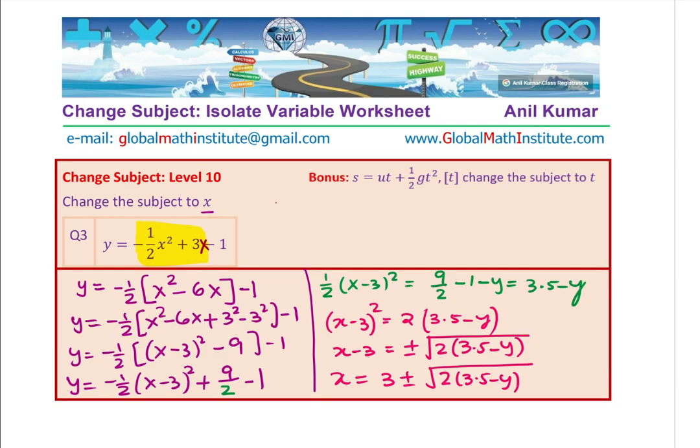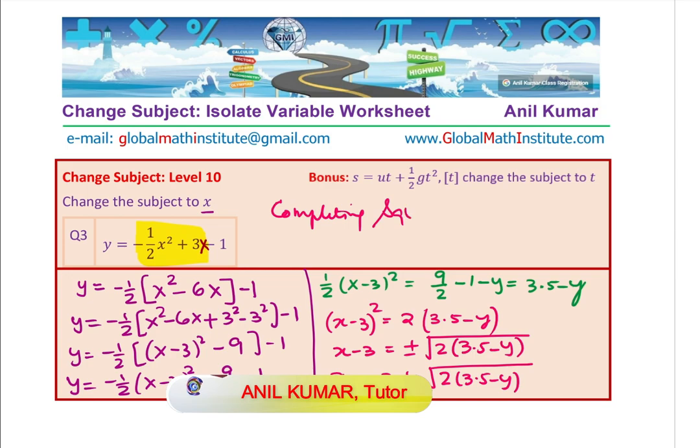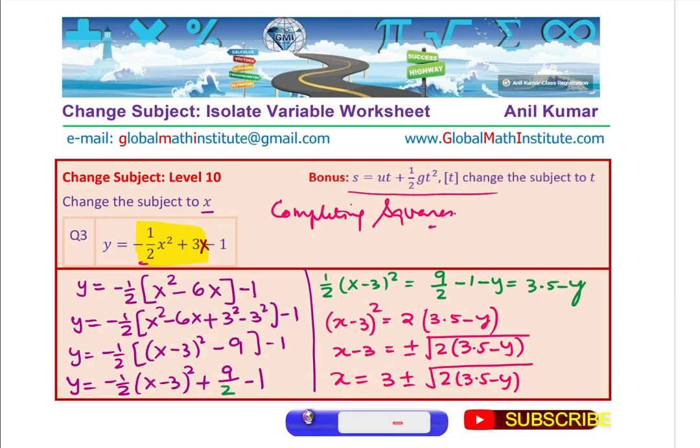That is how you see, by completing the squares, we could isolate x, and that is the change of variable. Here we have applied completing the square method once again. This one was slightly different because we had coefficient as -½. I hope you have understood this strategy. Feel free to write a comment, share your views. And it's time for you to apply the strategies learned to answer the bonus question.